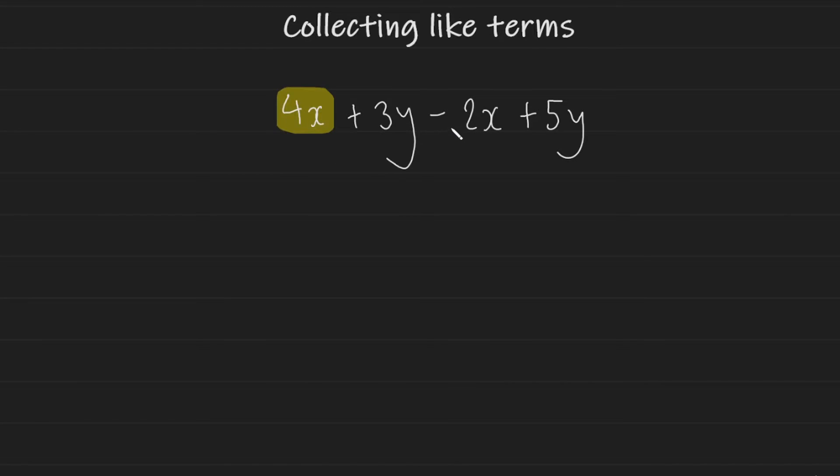You highlight the terms that are the same. So here we have a 4x. I'm going to look through my expression for any other terms that have an x. We have a negative 2x here, and that's the point I want to make. When you highlight this term, make sure you get the operation to the left of it. The operation to the left of all terms belongs to that term.